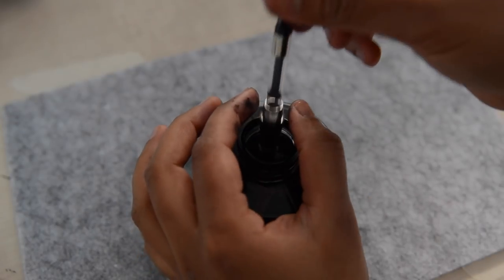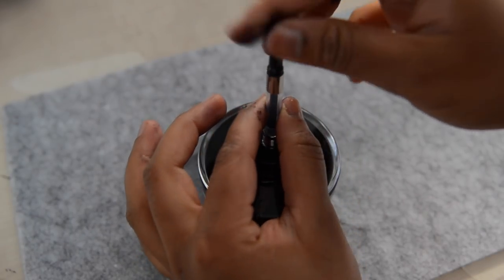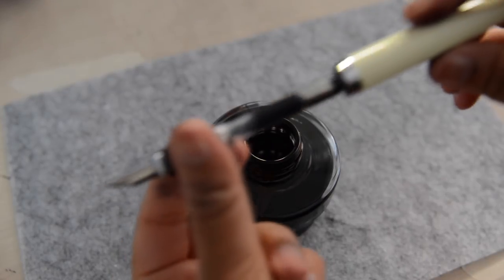So with the nib assembly done I just filled it up with some black fountain pen ink and then screwed on the back.